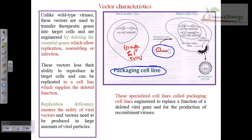This gene must have the packaging signal, which is incorporated into the helper genome. The helper genome is present in the packaging cell line. The packaging cell line provides all the necessary proteins for producing the capsid of the virus, while the new viral gene provides the signal for packaging. The signal for packaging is absent in the helper genome, but all coat protein production is present. Here the signal is present but coat proteins are absent — so they are complementary in nature.